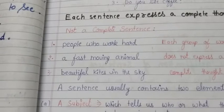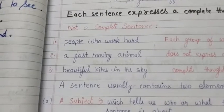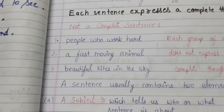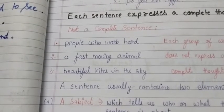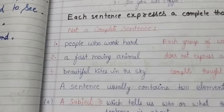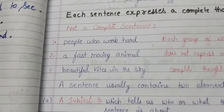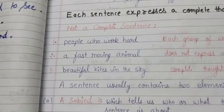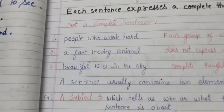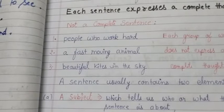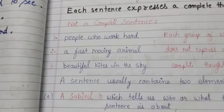'A fast moving animal' — it is also a group of words, but it is not providing a complete meaning or a complete thought, so it will be termed as not a complete sentence. 'Beautiful kites in the sky' is again a group of words, but most importantly it is not expressing a complete thought and not providing a complete meaning, so it will not be termed as a sentence.